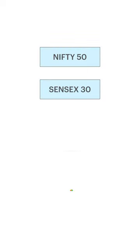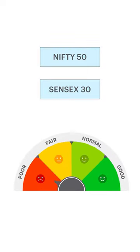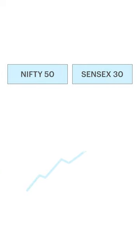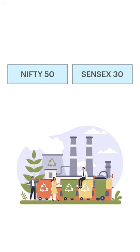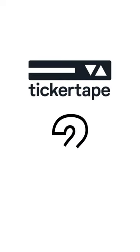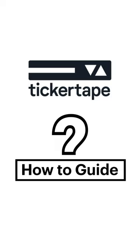A stock market index is often used as a benchmark for market performance. But what decides which direction it moves in, and what are the various companies and sectors that contribute to an index? In this video, let's learn how to view the constituents of an index.